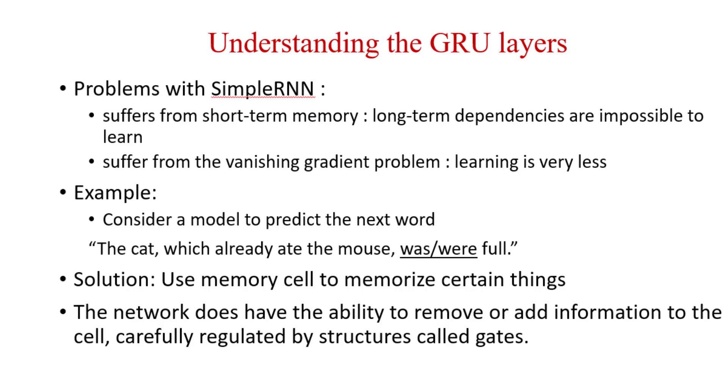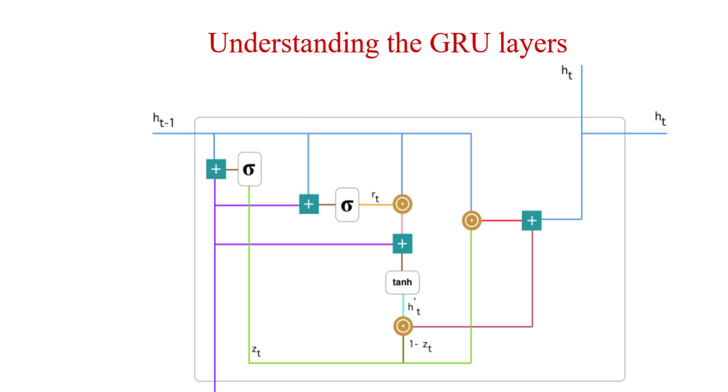So now let's see the structure of gated recurrent units. There are two types of gates used in gated recurrent unit. First is update gate and second is reset gate.